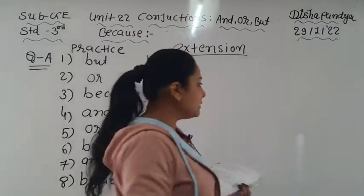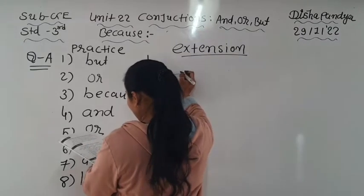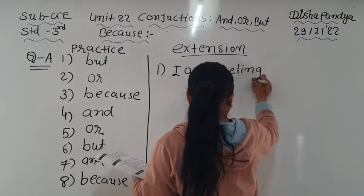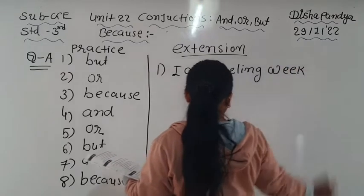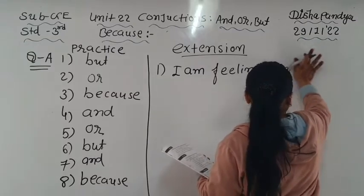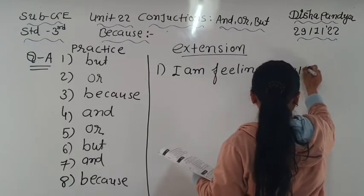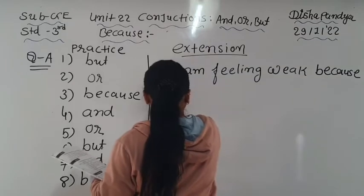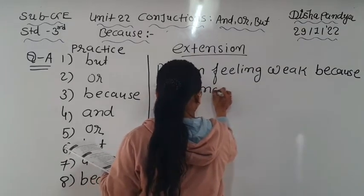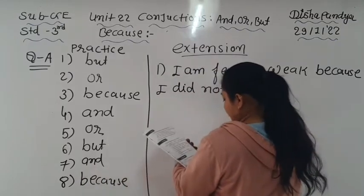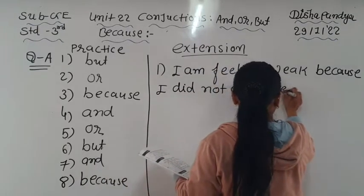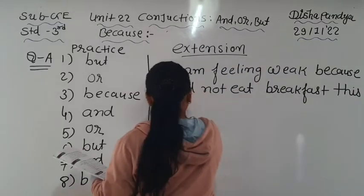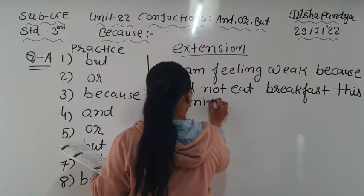So we write: 'I am feeling weak because I did not eat breakfast this morning.' That is how we join the two sentences using 'because', since the second sentence gives the reason for the first.